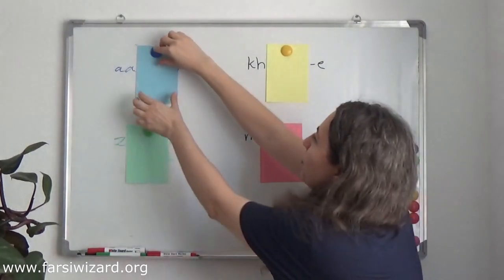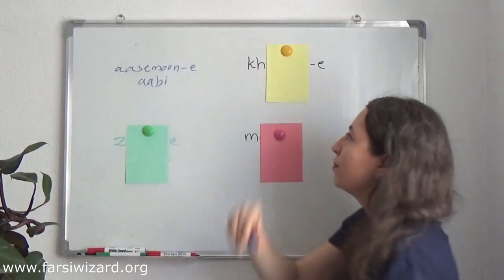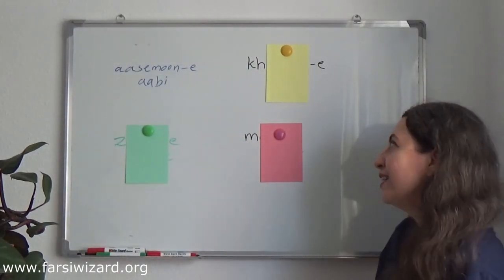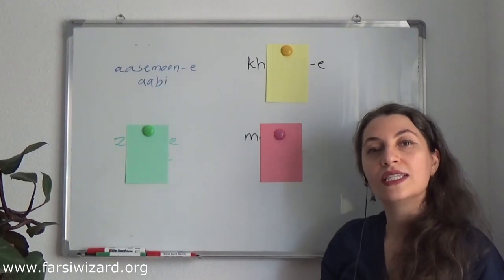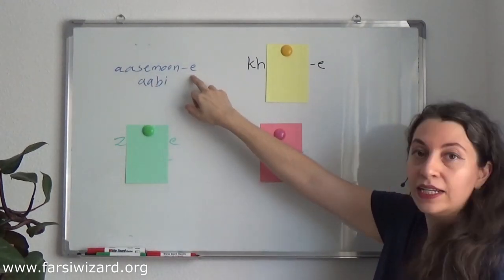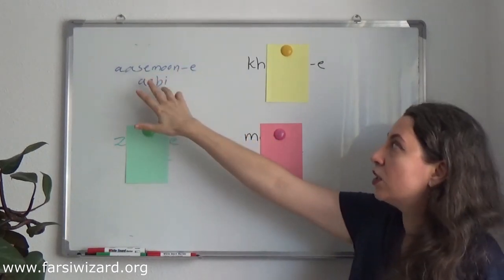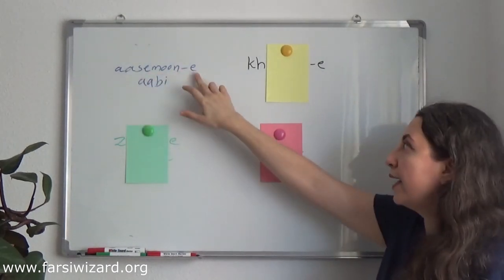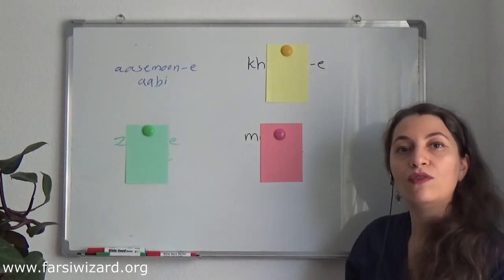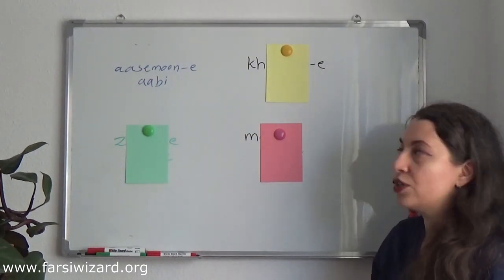Do you remember that? Let me show you. Was that correct? Could you guess it? It will be āsmāne ābi. Remember that we add a connector here. We always start with the noun, we add a connector 'e', and then we add the adjective. This is how we make an adjective-noun combination in Farsi.